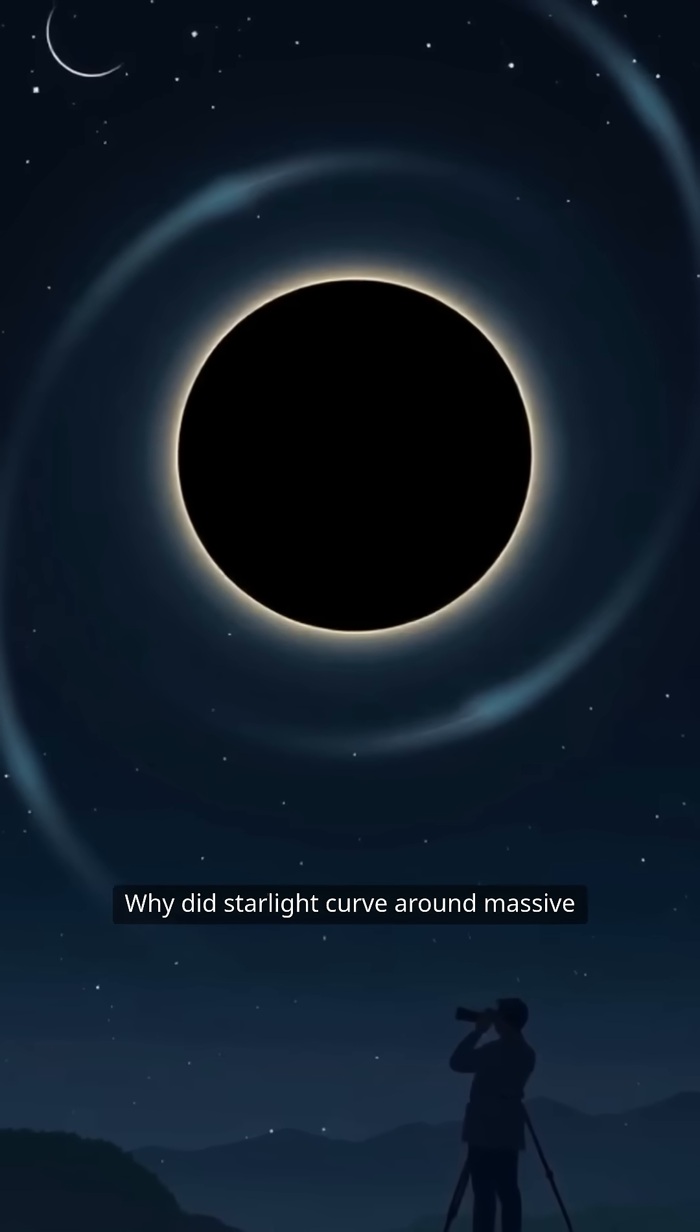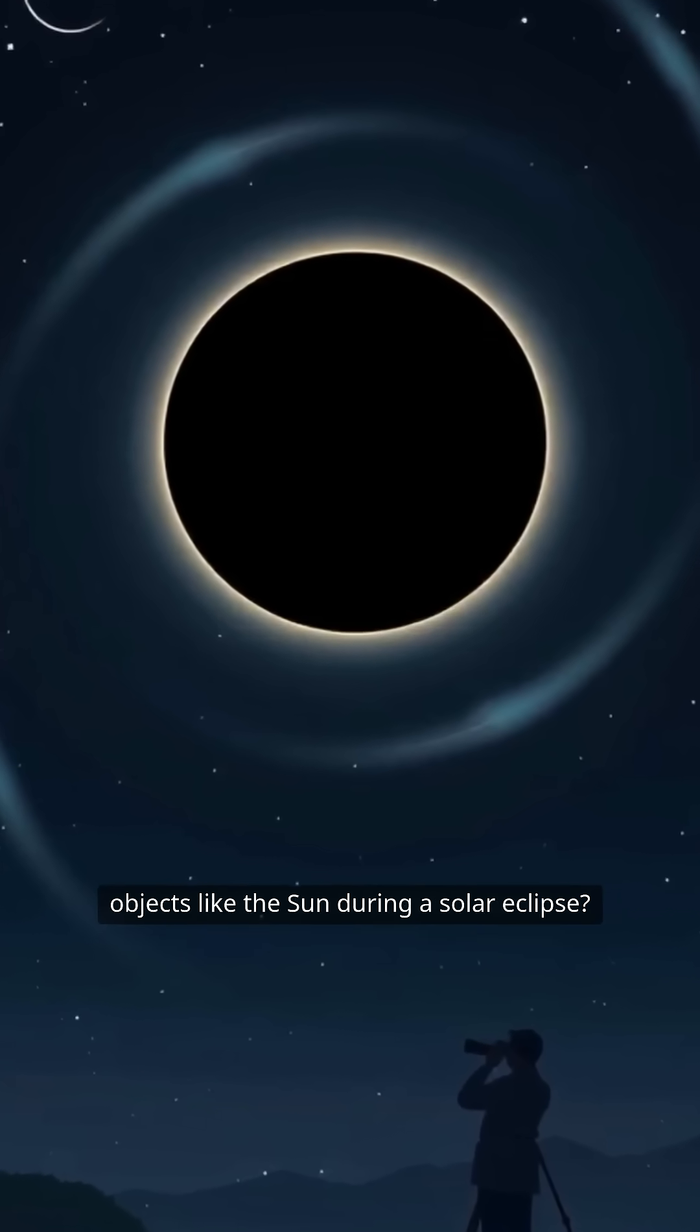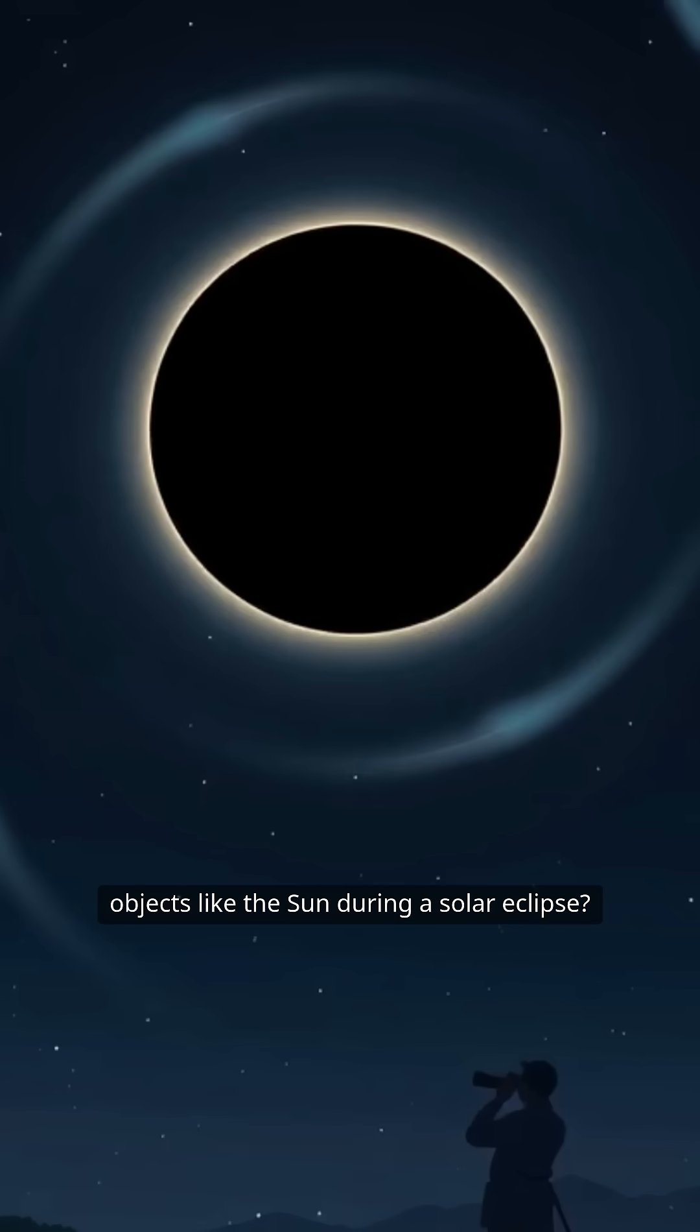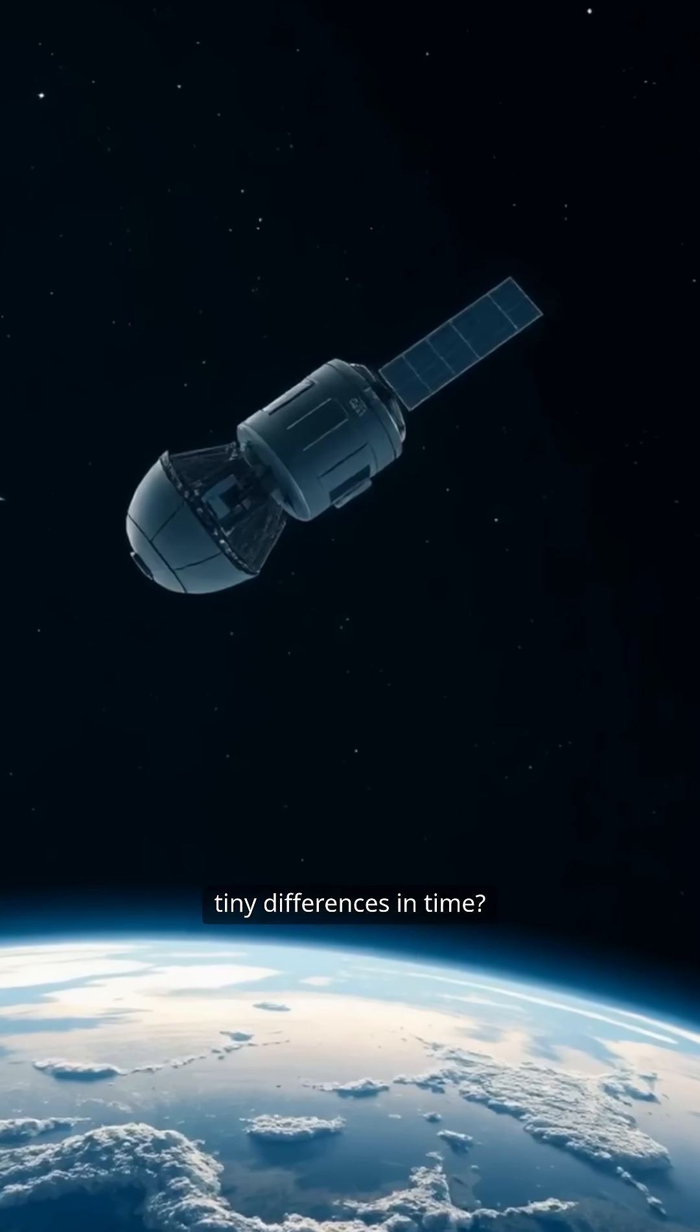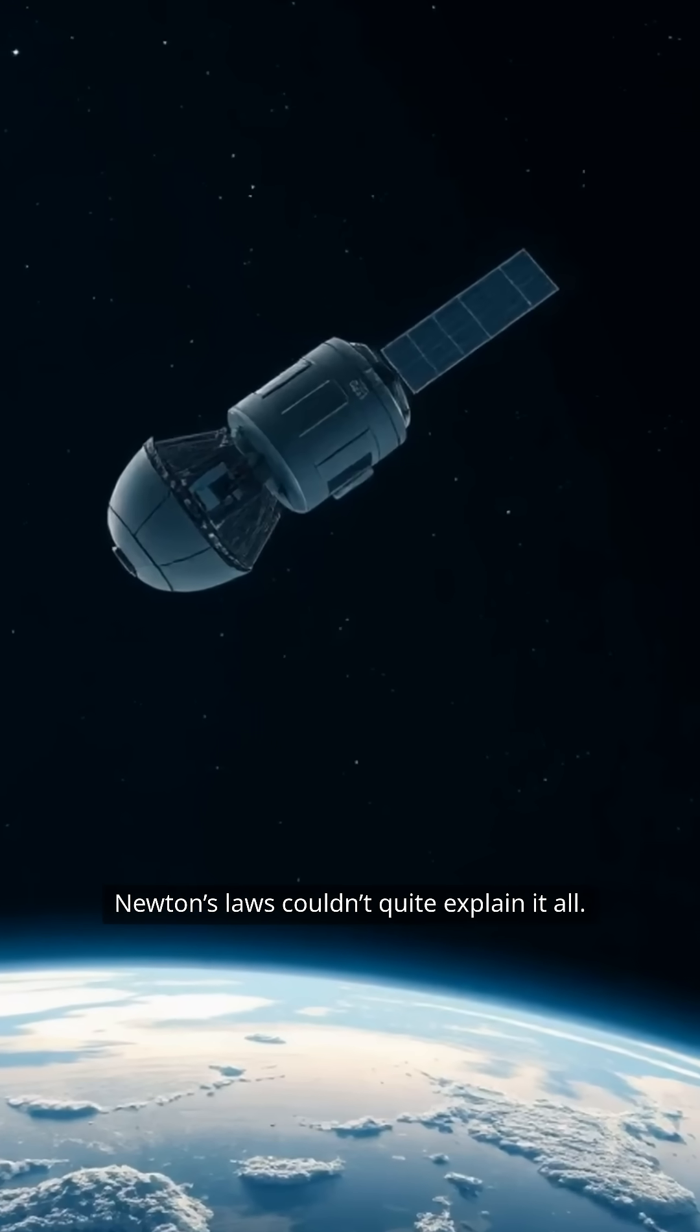But as scientists looked more closely, cracks began to appear. Why did starlight curve around massive objects like the sun during a solar eclipse? Why did satellites in orbit experience tiny differences in time? Newton's laws couldn't quite explain it all.